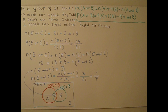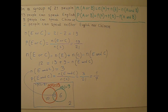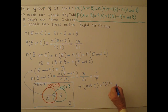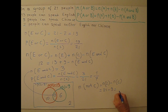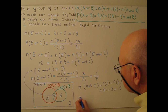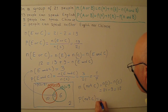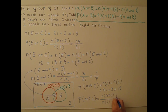Third question: if a person is selected at random, find the probability that the person cannot speak Chinese. Since 9 people can speak Chinese out of 21, N(not C) = N(S) − N(C) = 21 − 9 = 12. So 12 people cannot speak Chinese. P(not C) = N(not C) / N(S) = 12/21. This is the probability that a person cannot speak Chinese.